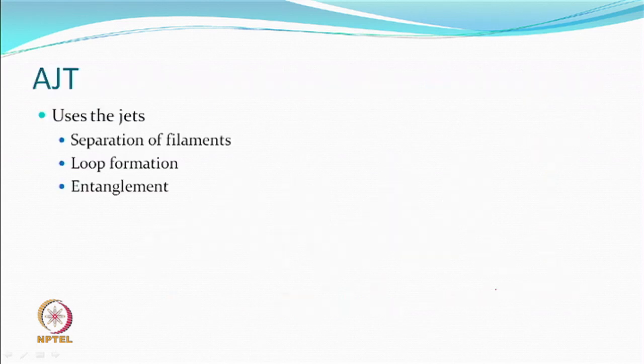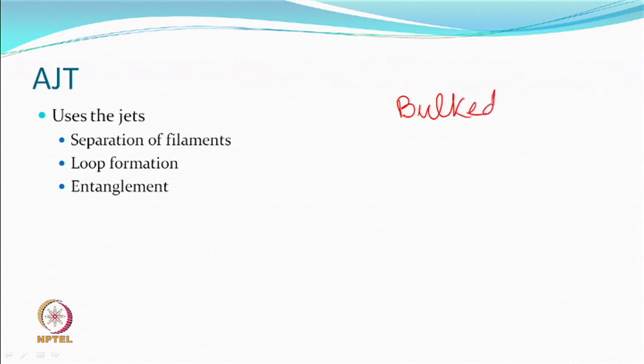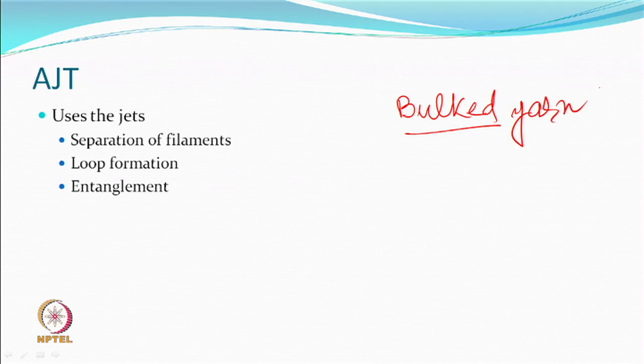The air jet textured yarn, on the other hand, is a process which gives a bulk yarn. What we are saying is that we will be looking at the possibility of combining these process principles. Air jet texturing uses jets whose main purpose is separation of filaments and their loop formation and entanglement.